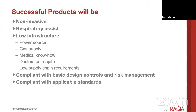So what does that mean for the open source community and what your successful products will be? This is my personal opinion, but I feel like the successful products are going to be non-invasive and respiratory assist in nature. They're going to be low infrastructure in terms of power source requirements, gas supply, and medical know-how. They're going to take into account the doctors per capita in the country where they intend to distribute them. And they're going to be low in supply chain requirements, both to manufacture the device and in the healthcare environment. They are going to be compliant with basic design controls and risk management and compliant with applicable standards.